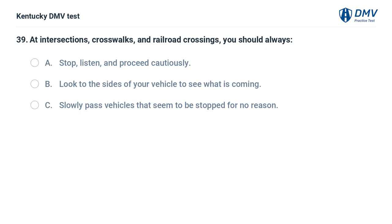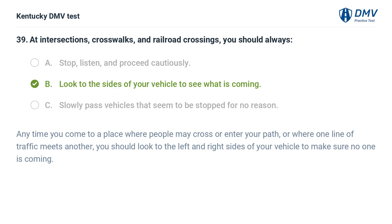At intersections, crosswalks, and railroad crossings, you should always: A. Stop, listen, and proceed cautiously. B. Look to the sides of your vehicle to see what is coming. C. Slowly pass vehicles that seem to be stopped for no reason. The correct answer is B. Anytime you come to a place where people may cross or enter your path, or where one line of traffic meets another, you should look to the left and right sides of your vehicle to make sure no one is coming.